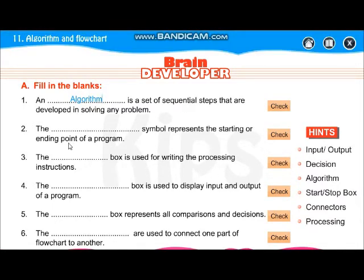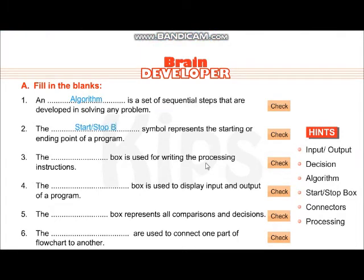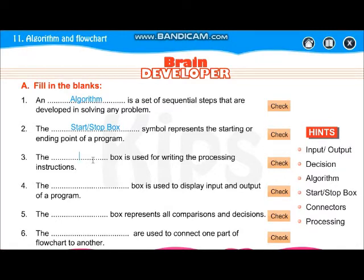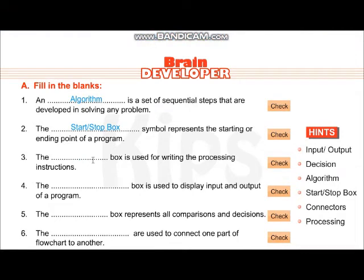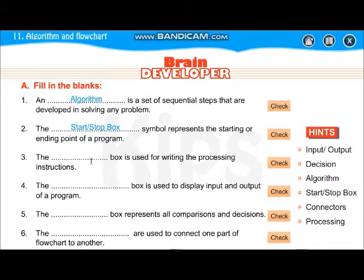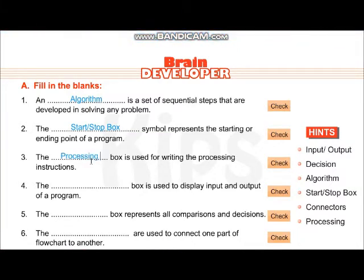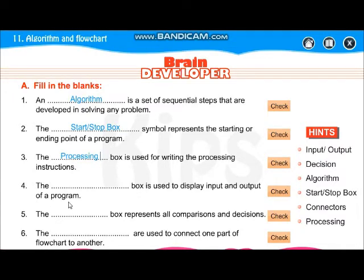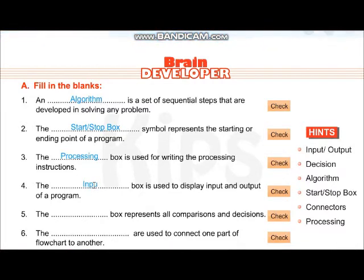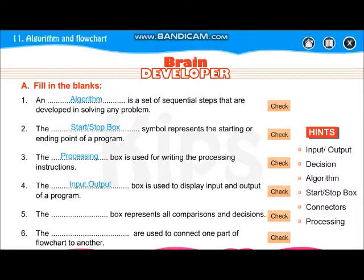The dash symbol represents the starting or ending point of a program — that is the start or stop box. The dash box is used for writing the processing instructions. The dash box is used to display input and output of a program — that is your input and output box, and the shape of the input and output box is a parallelogram. The dash box represents all comparisons and decisions — that is the decision box, and the shape of the decision box is a rhombus, or diamond shape. Dashes are used to connect one part of a flowchart to another — that is your connectors.